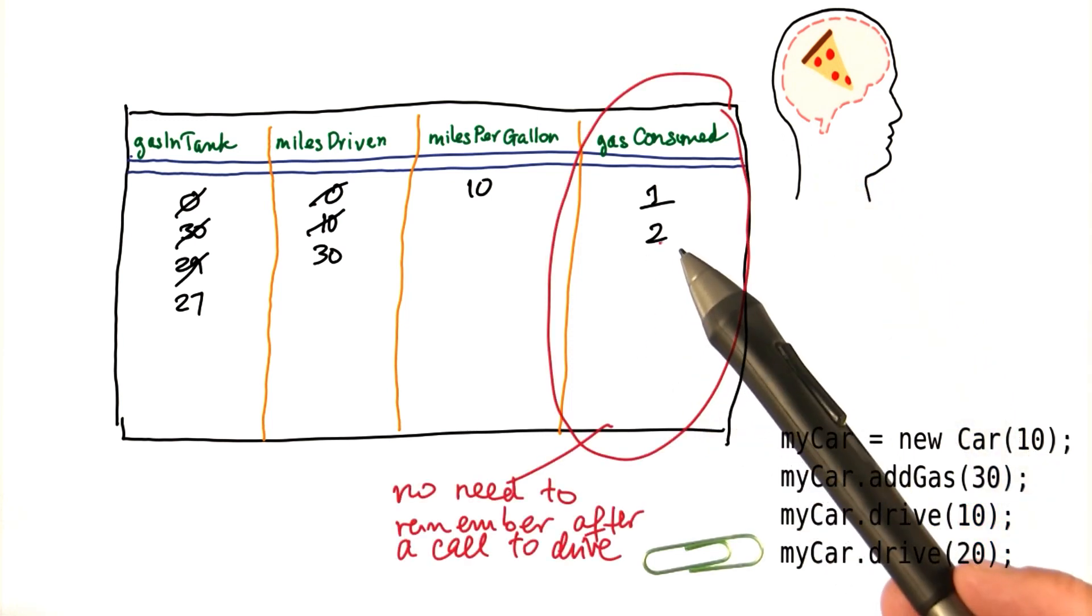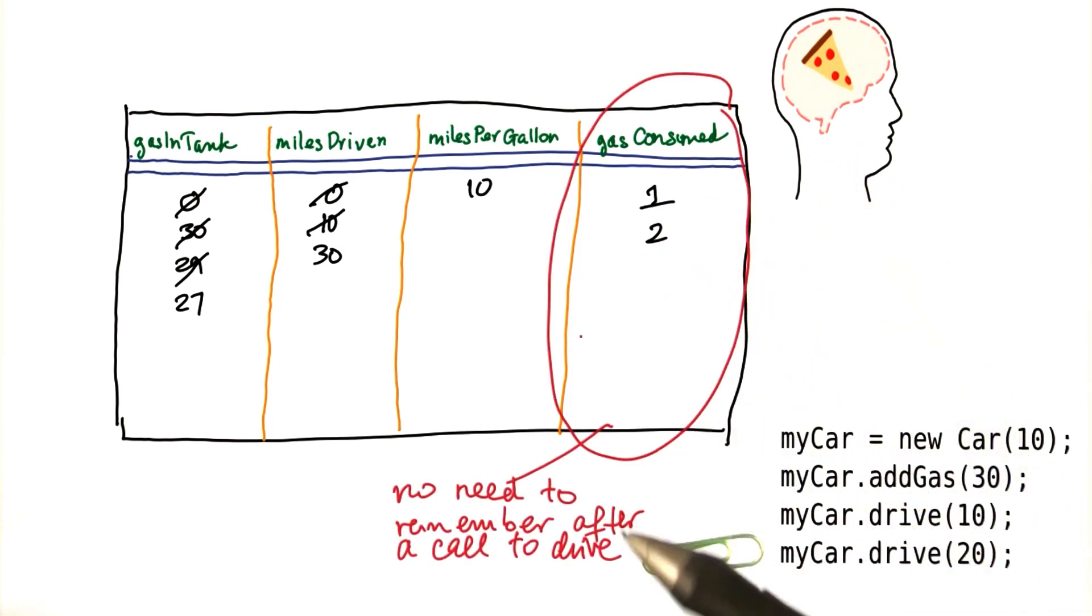There's absolutely no need to remember these values after a call to drive. They should be short-term memory. That should be a local variable.